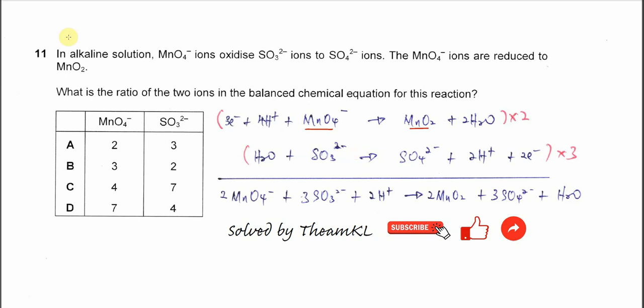Question 11. In alkaline solution, permanganate ion oxidizes sulfite to sulfate. The permanganate ions are reduced to manganese oxide. What is the ratio of the two ions in the balanced chemical equation for this reaction?